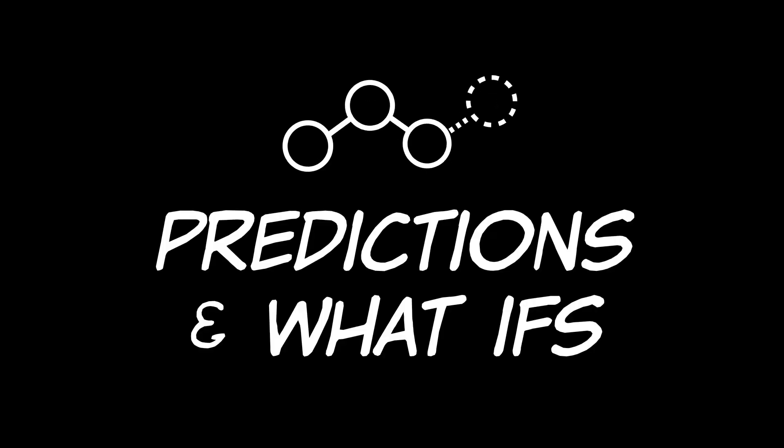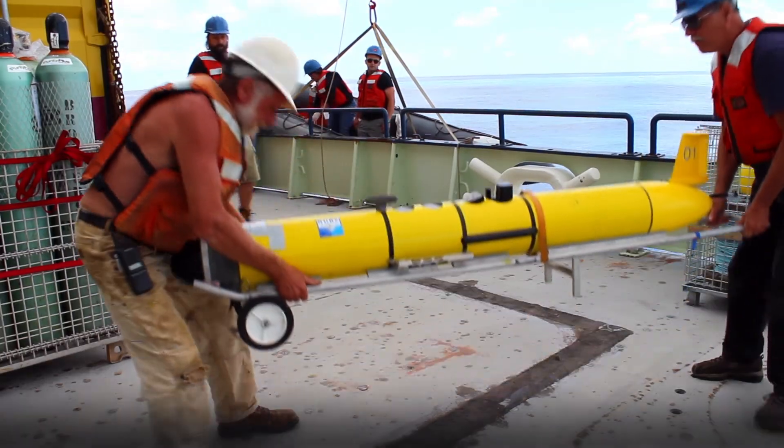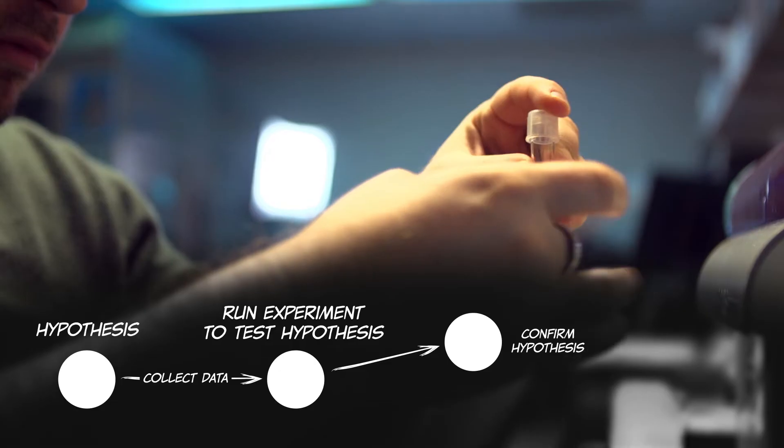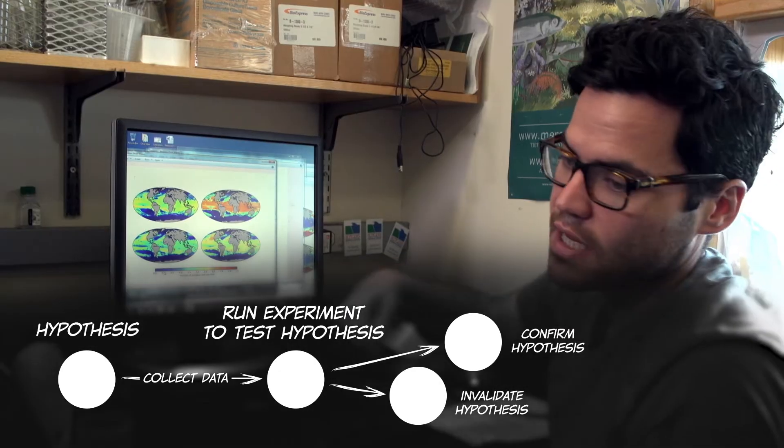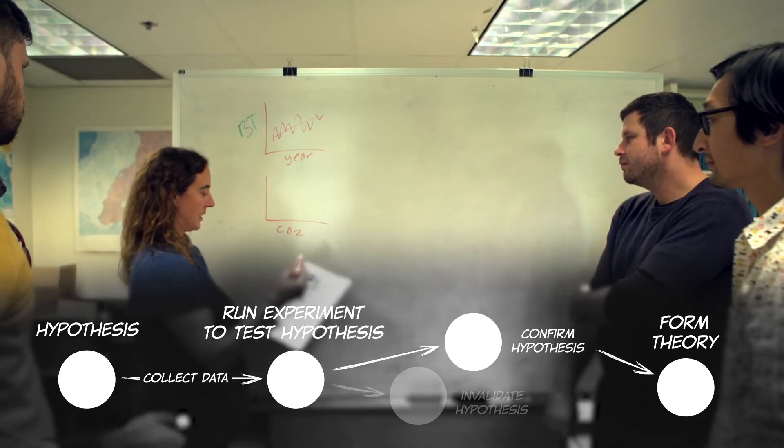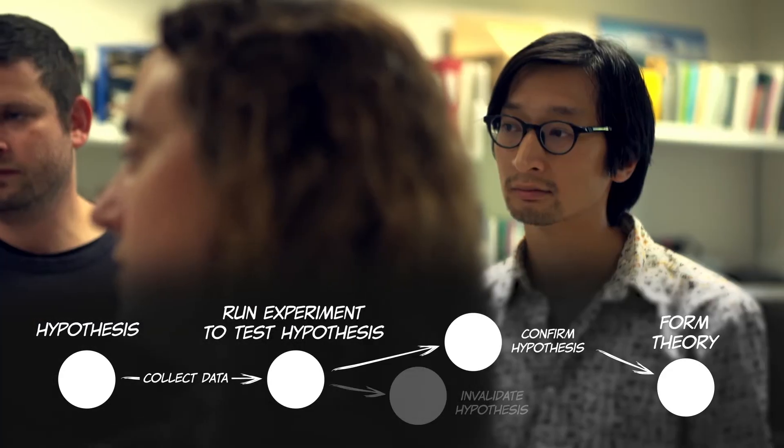Scientists run experiments to test hypotheses. And most often scientists collect data in the real world by running a physical experiment and seeing if the hypothesis they're testing holds up to reality. And then they collectively form the basis of a theory that is used to explain how the natural world works and predict things that happen.